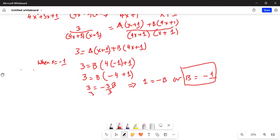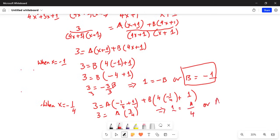When x is equal to minus 1/4, we have 3 is equal to A times minus 1/4 plus 1 plus B times 4 times minus 1/4 plus 1. Basically the term containing B is minus 1/4 plus 1, factor of B is 0, so B disappears. 3 is equal to A, 1 minus 1/4 is 3 by 4. This will lead to 1 is equal to A by 4 or A is equal to 4.